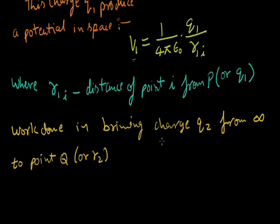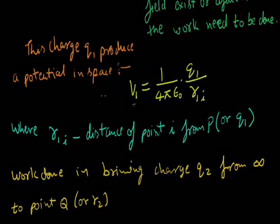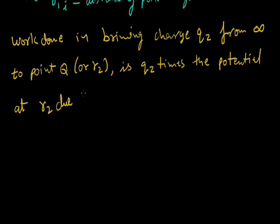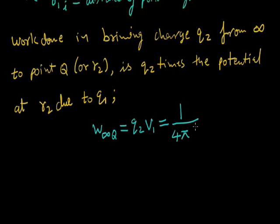...to point Q (or R2)—see the diagram. Charge Q2 we are bringing from infinity. Work done is Q2 times the potential at R2 due to Q1. The work from infinity to Q will be Q2V1, which will be written as 1 upon 4π epsilon_0 into Q1Q2 upon r12, where r12 is distance between P and Q.